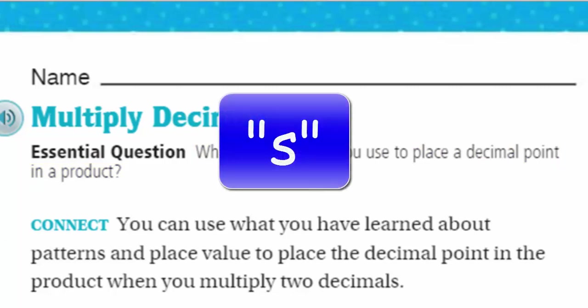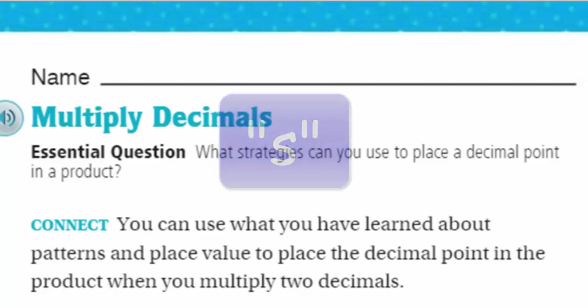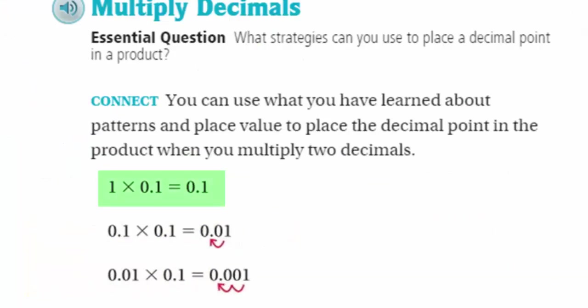That sounds very complicating. By the end of this lesson you're going to be going woohoo! Let's connect. You can use what you have learned about patterns, which we know mathematics is all about patterns, and place value to place the decimal point in the product when you multiply two decimals. When you take 1 times 1/10, that's going to equal 1/10. That's the good old identity property.